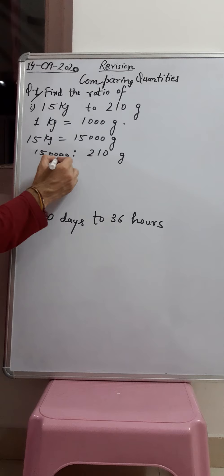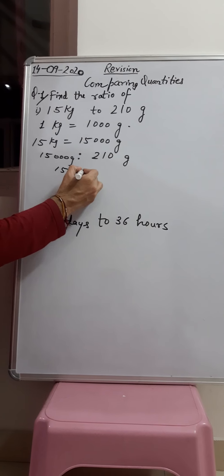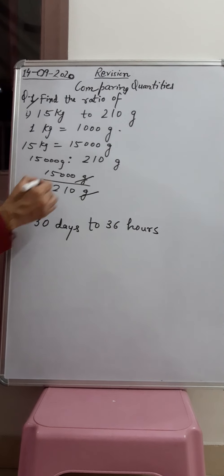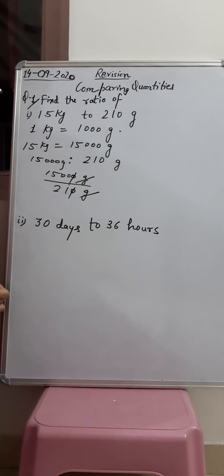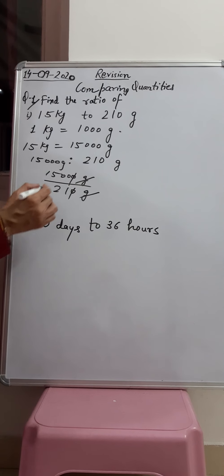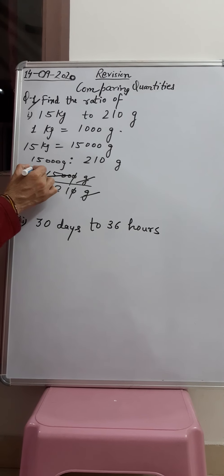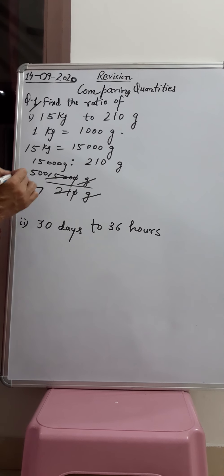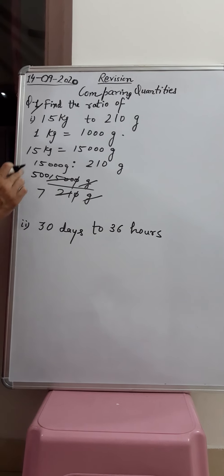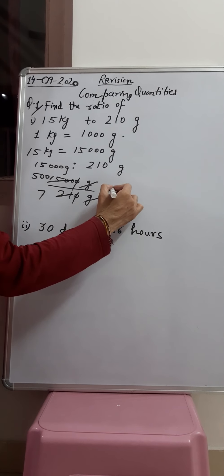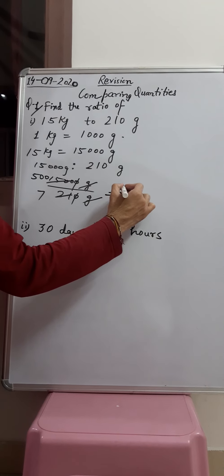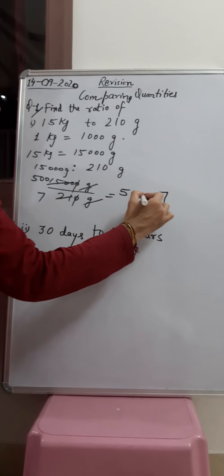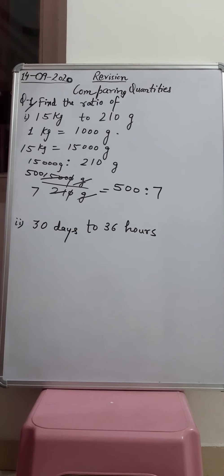So this means 15,000 grams upon 210 grams. Grams cancel; one zero and one zero will get cancelled, leaving 1500 and 21. Both are in the table of 3: 500 and 7. So 500 and 7 have no common factor, so the final ratio will be 500 ratio 7.